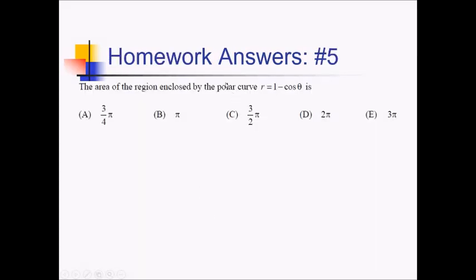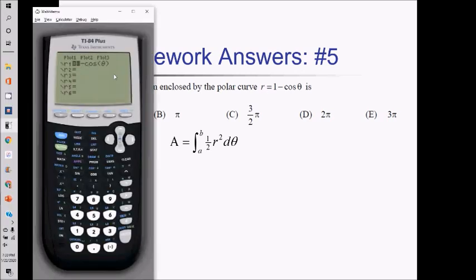On this problem, we want to know the area of the region enclosed by this polar curve. For area, I'm immediately going to write down: integral from a to b of 1 half r squared d theta. I've already got the r value — they gave it to me. I just need to figure out my limits of integration. Let me go to the calculator and graph this out. I'm on my grapher in r equals mode with polar mode and my window set from 0 to 2 pi. Let me do a zoom fit — and there is our graph. It's a cardioid.